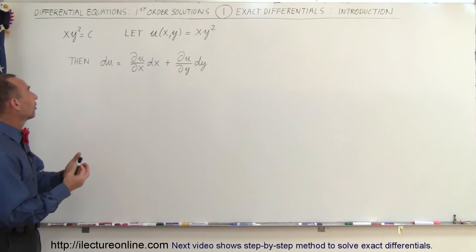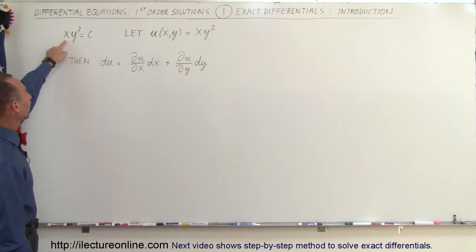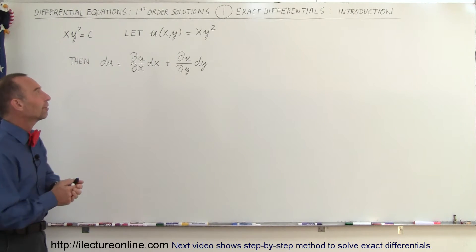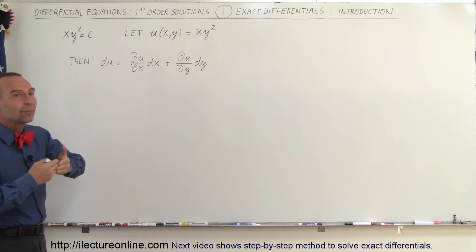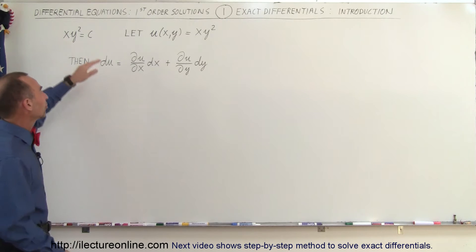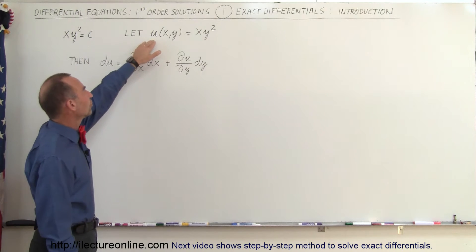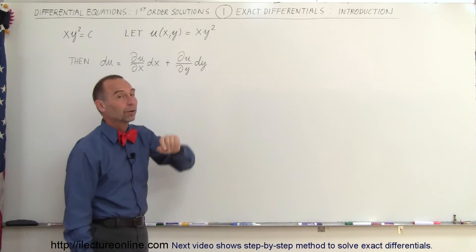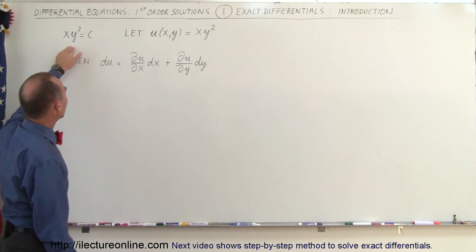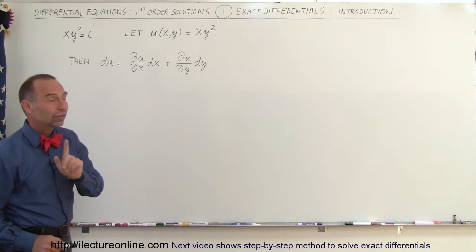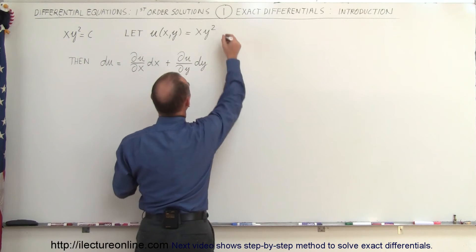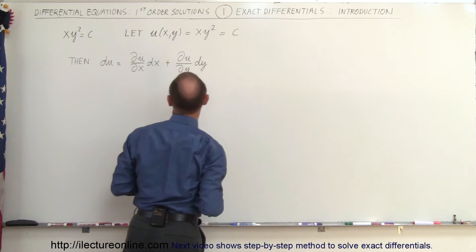Let's start with a function that involves both the variable x and y, and let's say that x times y squared equals c. We take some arbitrary function and represent it by u, where u is a function of x and y, so therefore it's equal to xy squared. Since xy squared is equal to a constant, u must also be a constant, so we can set this equal to c.